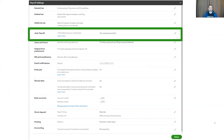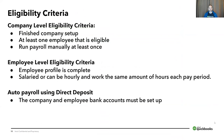Next, auto payroll. In order to be eligible for auto payroll, the company must be completely set up, have at least one employee who is eligible, and payroll must be run manually at least once. At the employee level, the employee profile must be complete and the employees must be salaried or hourly but have a set amount of hours that they work each pay period. This can be done using either direct deposit or even if you're paying by check.